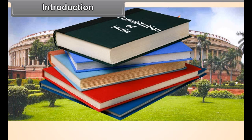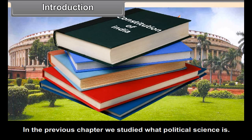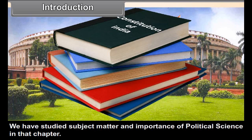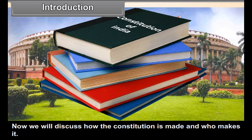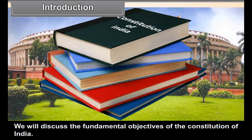Chapter 5: Making of the Constitution. In the previous chapter, we studied what political science is — its subject matter and importance. Now, we will discuss how the Constitution is made and who makes it, as well as the fundamental objectives of the Constitution of India.